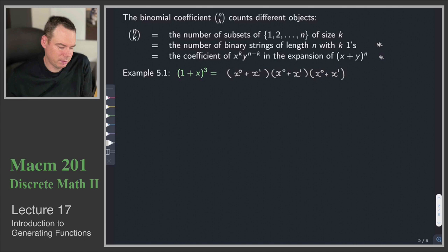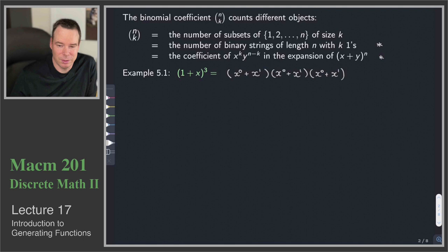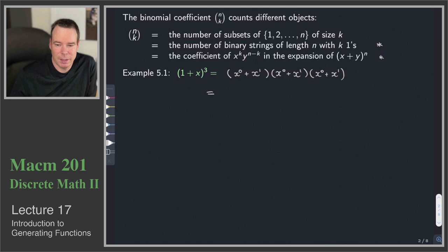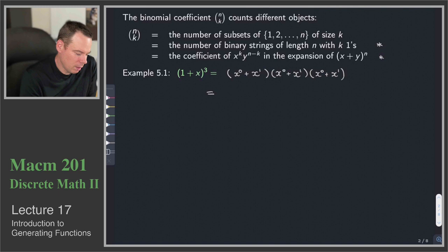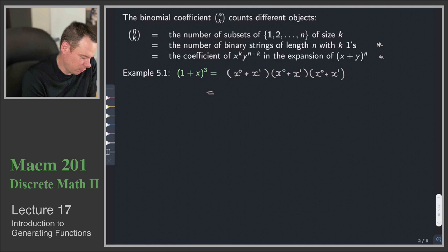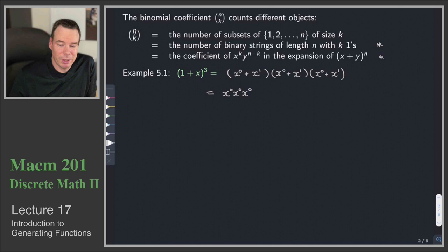In order to do that, I'm going to write 1 as x to the power of 0. When I cube that expression, I'm really taking the product of (x⁰ + x¹) multiplied by itself 3 times. I've also put an exponent of 1 on the x to bring in the idea of binary strings. When we expand this, we can do it strategically — I'm going to multiply all the x's with 0 in the exponent: x⁰ · x⁰ · x⁰, which is 1.